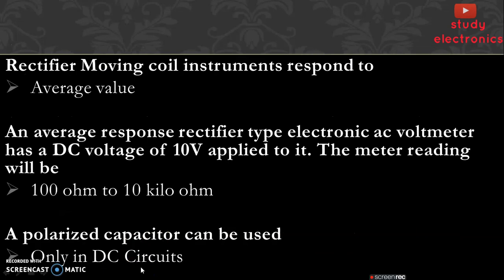Next, rectifier moving coil instruments respond to average value. Next question: an average response rectifier type electronic AC volt meter has a DC voltage of 10 volts applied to it. The meter reading will be, so if a DC voltage of 10 volts is applied to a rectifier type electronic AC volt meter, the meter reading will show between 100 ohm to 10 kilo ohm.